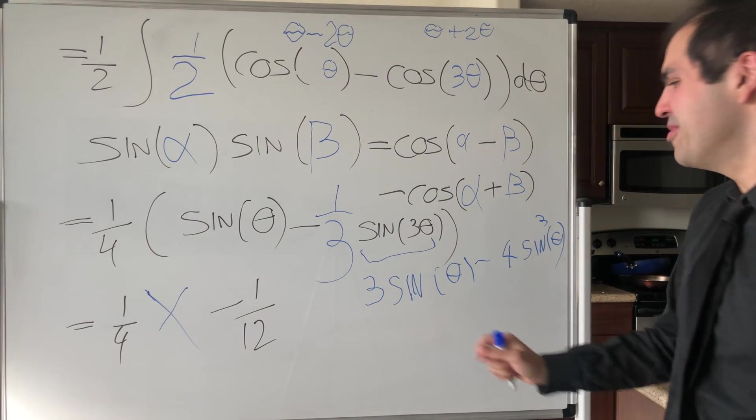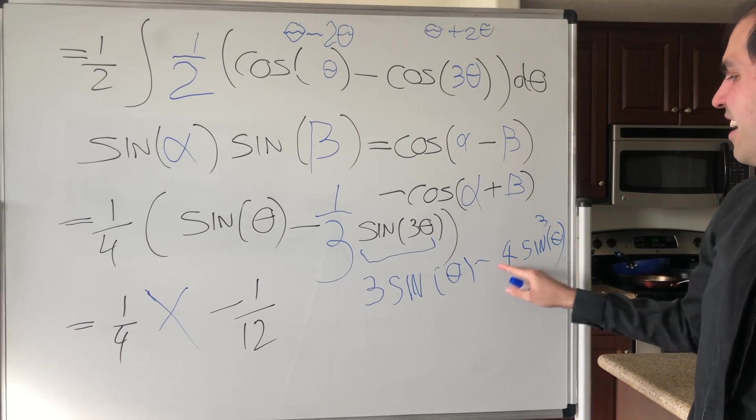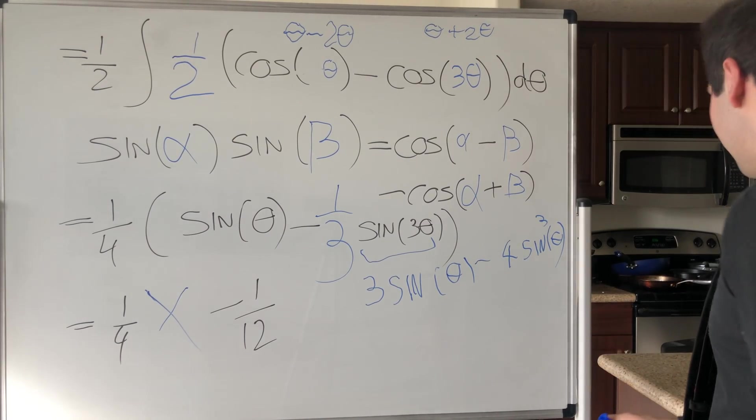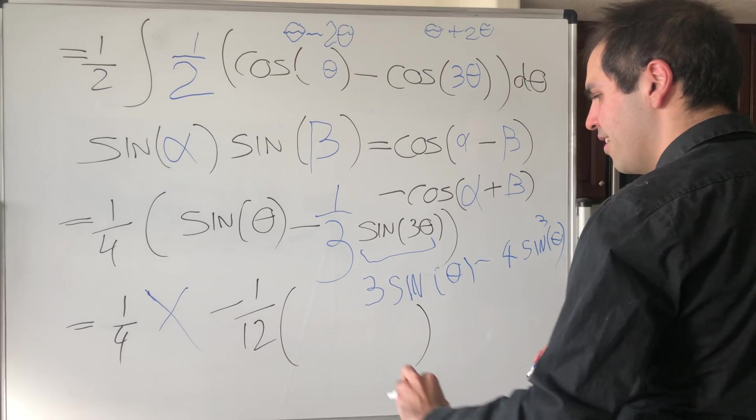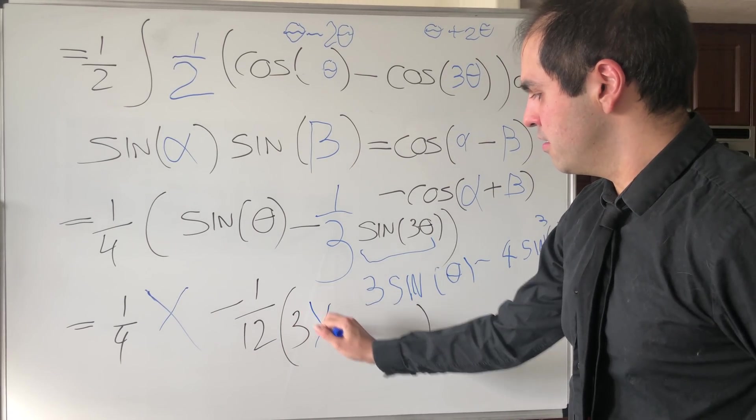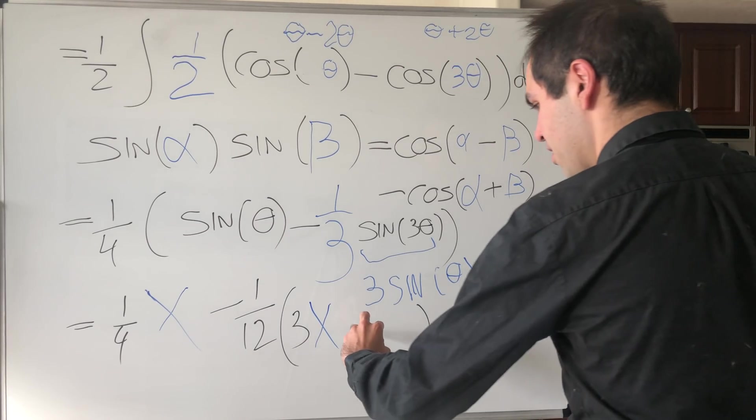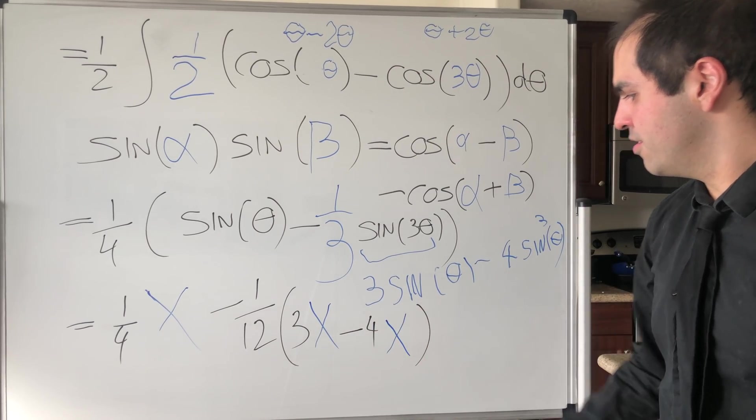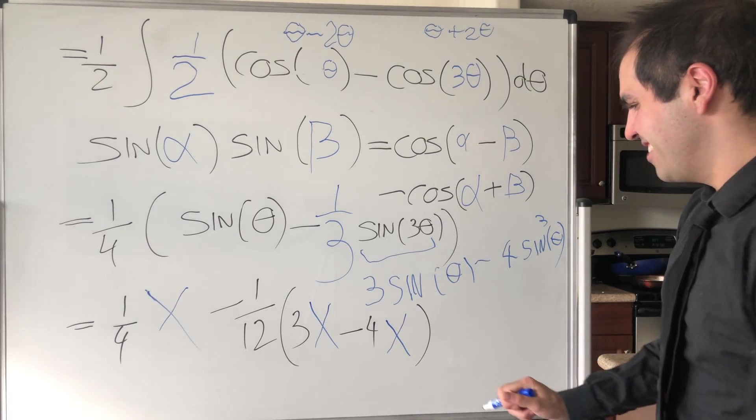So again, I don't have this cool shirt to compare, but yeah, we get minus three sine of theta, minus four sine cubed of theta, and then if you plug that in, so it would be one half, minus one twelfth, and then three sine of theta, that is three x, tres x, and then minus four sine cubed of x, so x, well, cubito, I guess, x cubed.